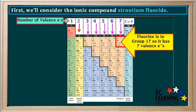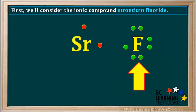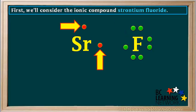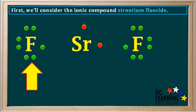Fluorine is in group 17, so it has seven valence electrons. We'll add a fluorine atom here, showing its seven valence electrons in green. You can see it has three lone pairs and one unpaired electron. Notice that the fluorine atom only needs to gain one electron to form a stable octet, but the strontium atom must lose two electrons to form a stable ion. So what we can do is add another fluorine atom over here on the left.